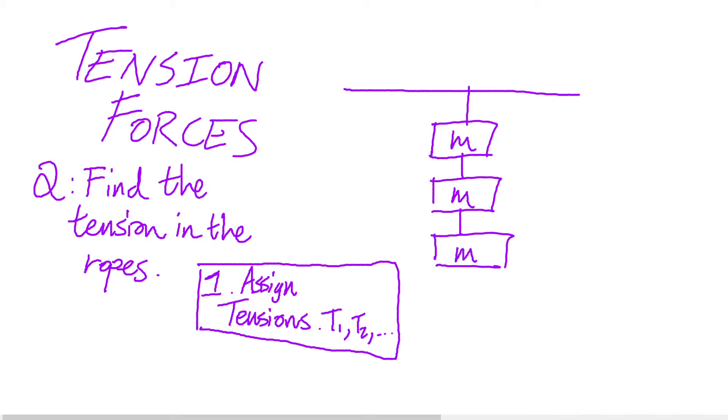The first thing to do in this problem solving situation is to find the number of ropes there are and assign a tension force to each one of them. This situation has three ropes we're going to have three different tension forces one for each t1, t2 and t3.